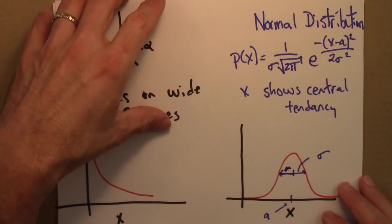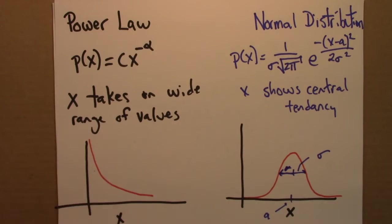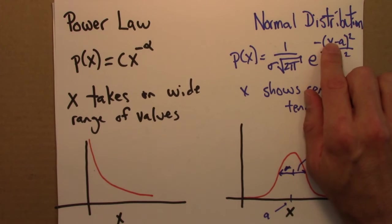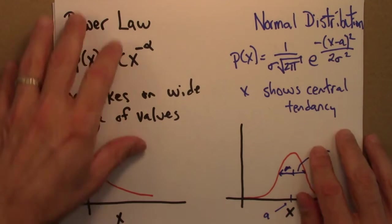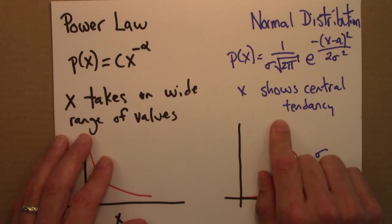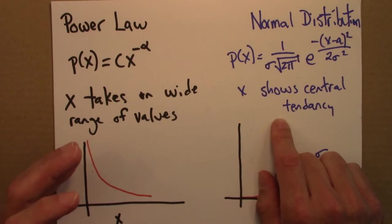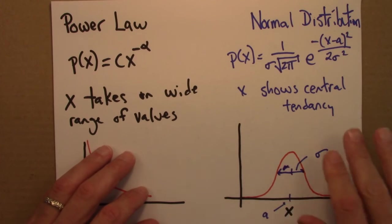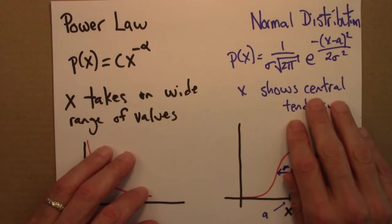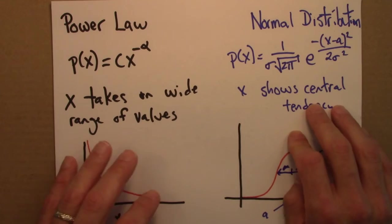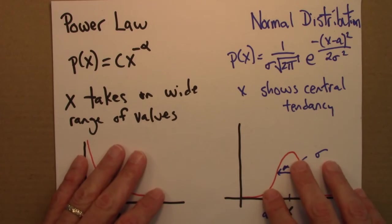Normal distributions are very common across the sciences, and there's a reason for that known as the central limit theorem. I want to spend the rest of this video talking about the central limit theorem, and I'll do that with an example so we can see it in action.